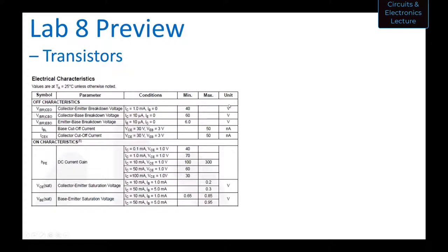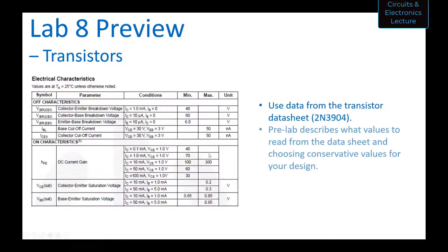You're going to use data from the transistor datasheet — a snippet is shown here and the full datasheet is on the course website. The pre-lab describes which values to read. It will help you choose conservative values for your design. For example, you don't want to choose a beta that's too large because you might under-design your base current. HFE is actually the beta value, and you're going to use a conservative value of around 30.